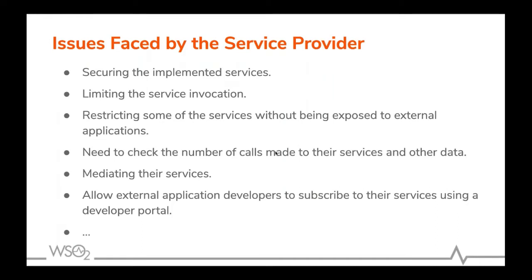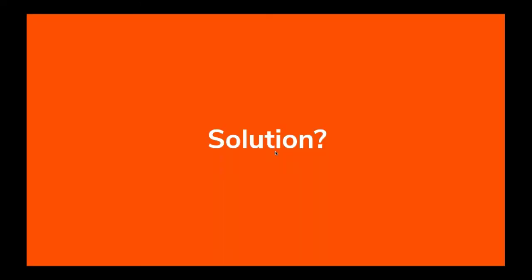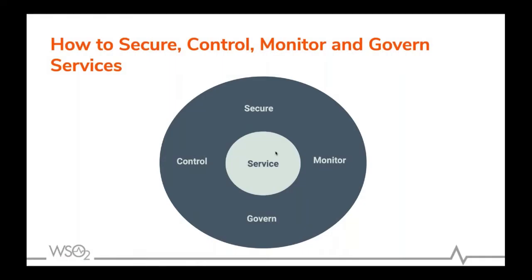While this communication is happening smoothly, there will be external parties trying to access this data. The Flight Information System might be using the service at high frequency. The service provider, ABC, will then face problems such as how to secure the service, how to monitor service invocations, how to limit invocations, how to restrict the API for external parties, and so on. So if we can introduce a layer that wraps up the service and facilitates controlling, monitoring, and governing, that will be the solution.